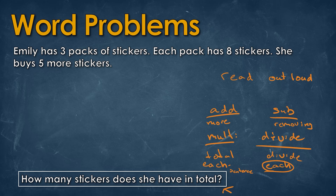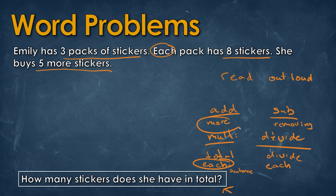So let's read this sentence. Emily has three packs of stickers — we can always highlight the information that might be important, so three packs of stickers. Each pack has eight stickers. She buys five more stickers. If 'each' is within the sentence, we know it's going to be multiplication. And we see that word 'more,' so we know we're going to add. But this is a two-step word problem, so we need to take this one step followed by a second step. That first step is going to be these first two sentences. Three times eight is equal to 24.